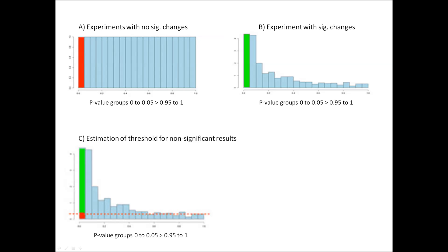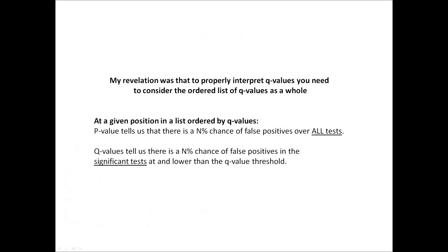If you took your list of results and ordered them by p-value, the q-value would be similarly ordered. My personal revelation was that to properly interpret q-values, you need to consider the ordered list of q-values as a whole.